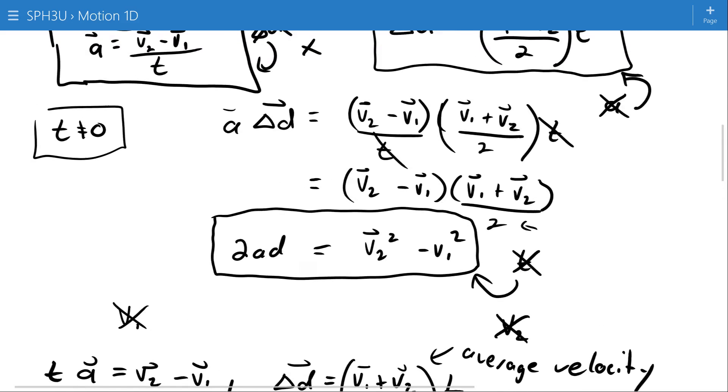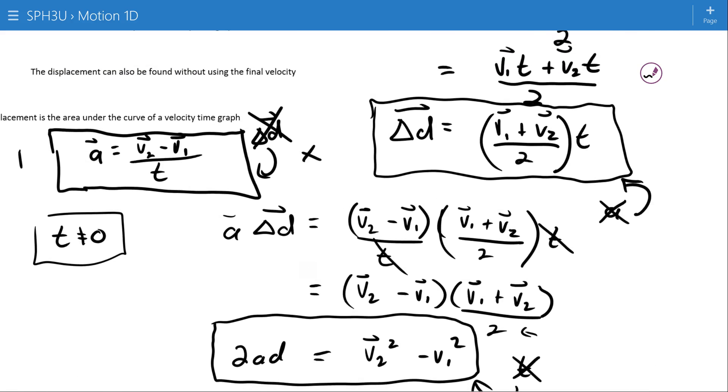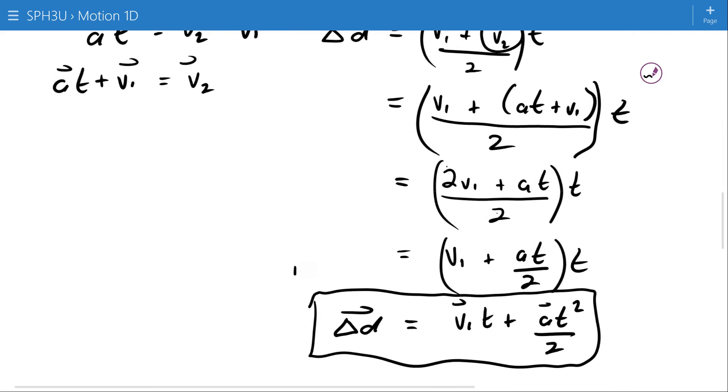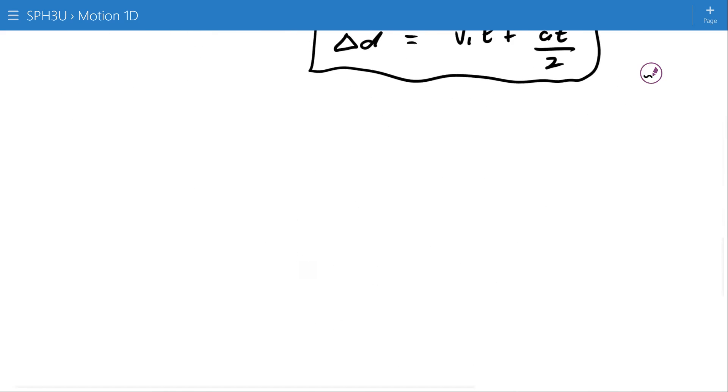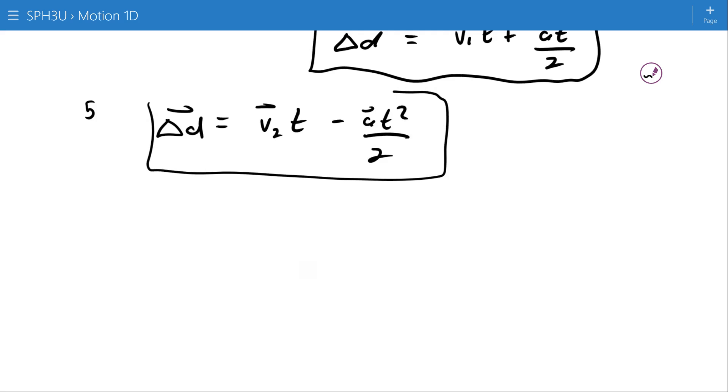So we've got 1, 2, 3, 4. The fifth one can be gotten the exact same way I got the fourth one, so I'm not going to write it out. I'm just going to give you the answer. The fifth equation of motion says that the displacement is equal to the final velocity times time minus at squared over 2. So it's just like the last one but with a minus when it has v2 in it. So there you go.